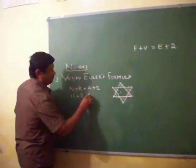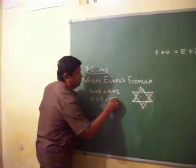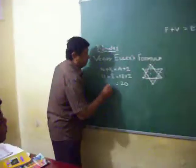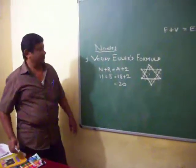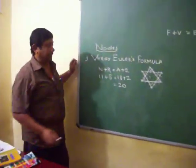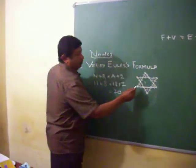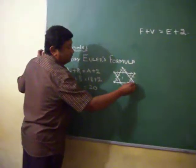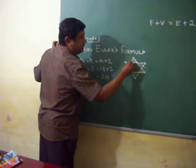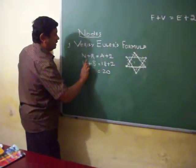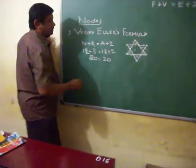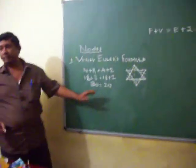So 18 plus 2 is 20. But it is not matching. Why is it not matching? Because nodes we have calculated wrongly. Recounting: 1, 2, 3, 4, 5, 6, 7, 8, 9, 10, 11, 12. So it should be 12. That's why 12 equals 12 — both are matching.